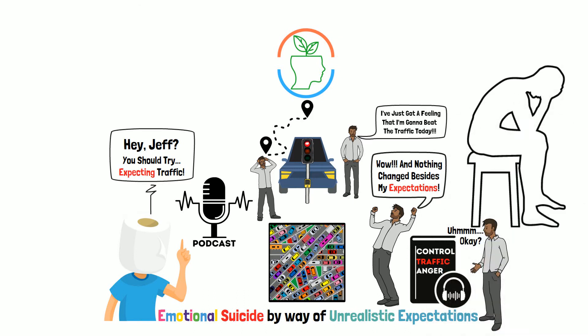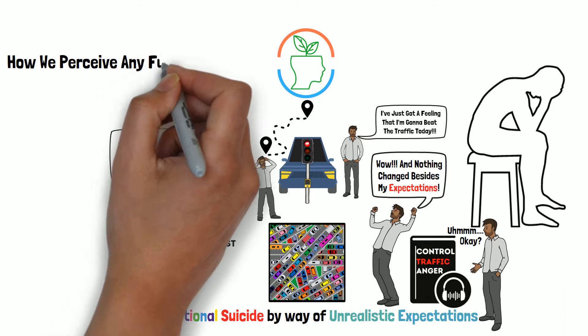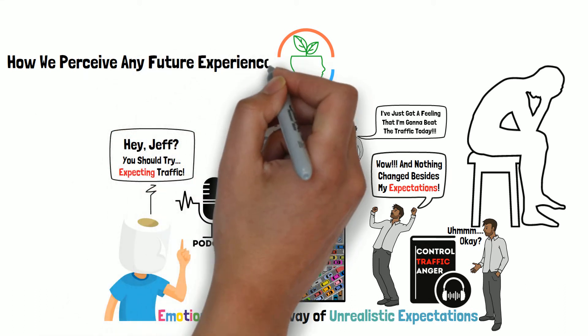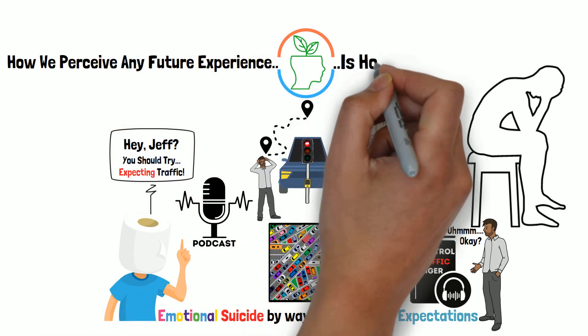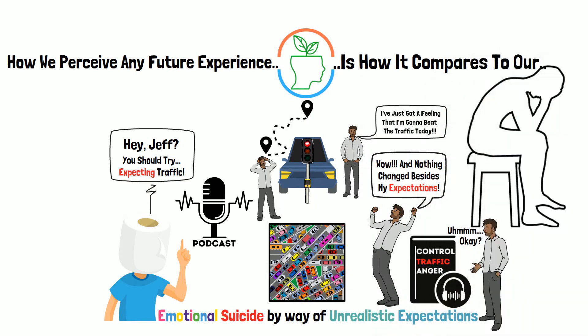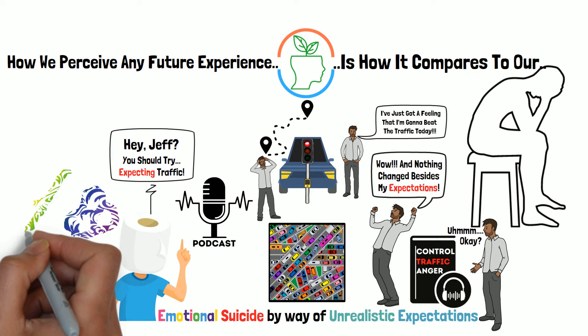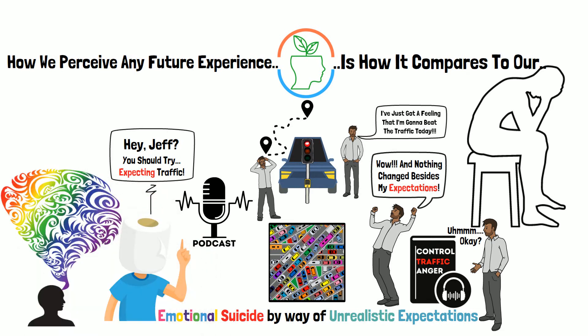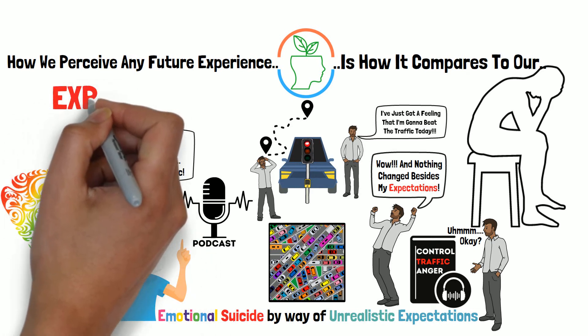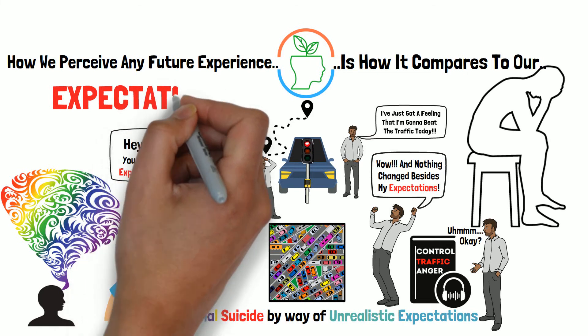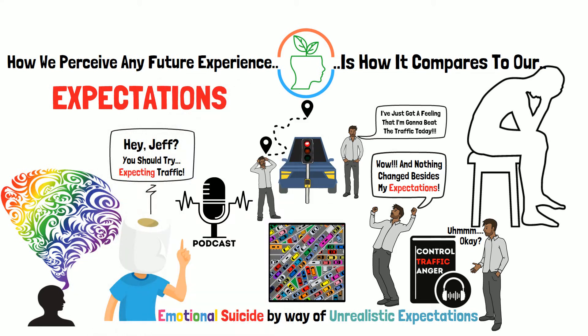How we perceive any future event is based on nothing other than the expectations we put on it. When we have an upcoming experience, we paint a picture of how we expect it to go inside our mind. When we have that experience, we define it by comparing it to the expectations we put in place. In other words, what the experience ends up meaning to us is how it compares to those expectations.